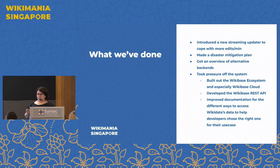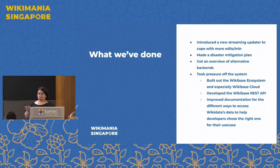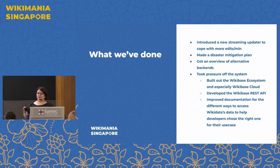We've also made a disaster mitigation plan for when we actually hit limits — meaning the Query Service just will not run anymore. We've communicated it and you can read up on it on-wiki. We've also gotten someone to look at different alternatives for backends to replace BlazeGraph. There's no decision made, but there's at least a short list of things that could potentially work and that we could potentially move to.